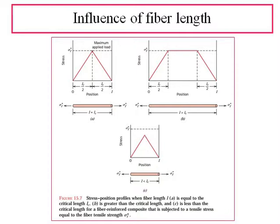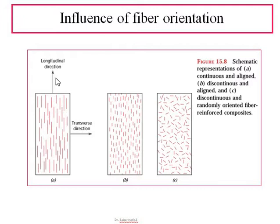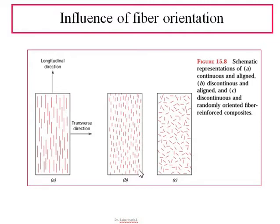Next, we see the influence of fiber orientation within the matrix. The first type is continuous and aligned orientation, which can handle both longitudinal and transverse direction loads effectively. The second is discontinuous and aligned, where continuity cannot be ensured and fiber length may be shorter. The third type is randomly oriented, where fibers are dispersed without any proper alignment.